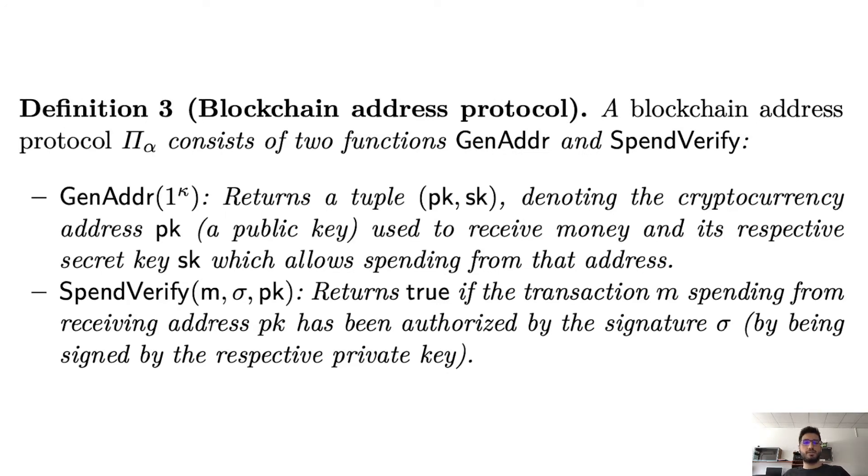We actually base this on a blockchain, an underlying blockchain protocol. It turns out the only two things we need from blockchain are the address generation, so basically when you start a wallet, it generates some key pair for you. You have a public and a secret key. Then from this public key, an address is derived. So this is what GenAddr does. Of course, it's non-deterministic. Every time you run it, it should give you a different address.